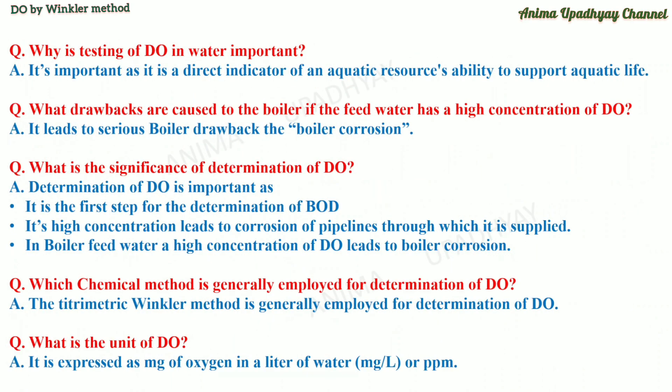Why is testing of D-O in water important? It is important as it is a direct indicator of an aquatic resource's ability to support aquatic life. What drawbacks are caused to the boiler if feed water has a high concentration of D-O? It leads to serious boiler corrosion. What is the significance of determination of D-O? It is the first step for the determination of BOD, the Biological Oxygen Demand. Its high concentration leads to corrosion of pipelines, and if the boiler feed water has a high concentration of D-O, it leads to boiler corrosion.